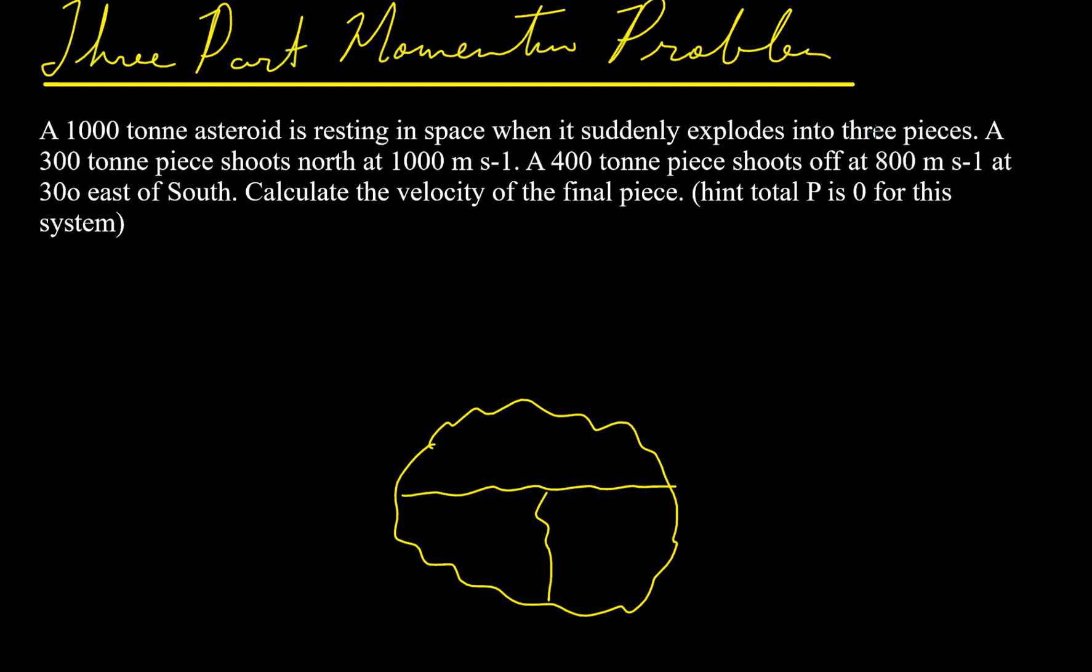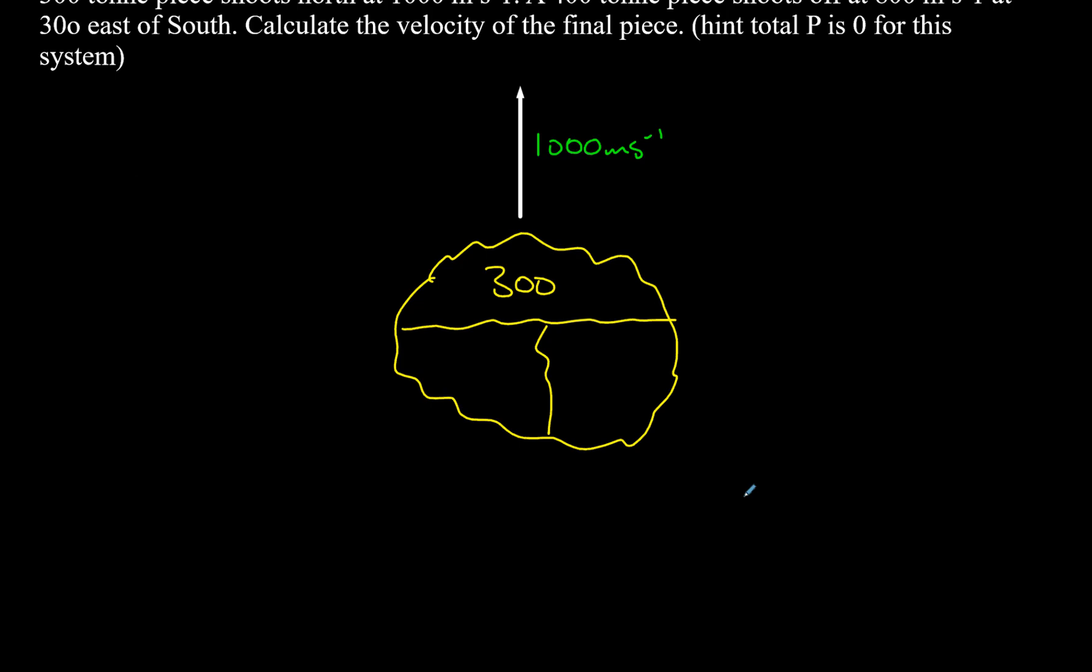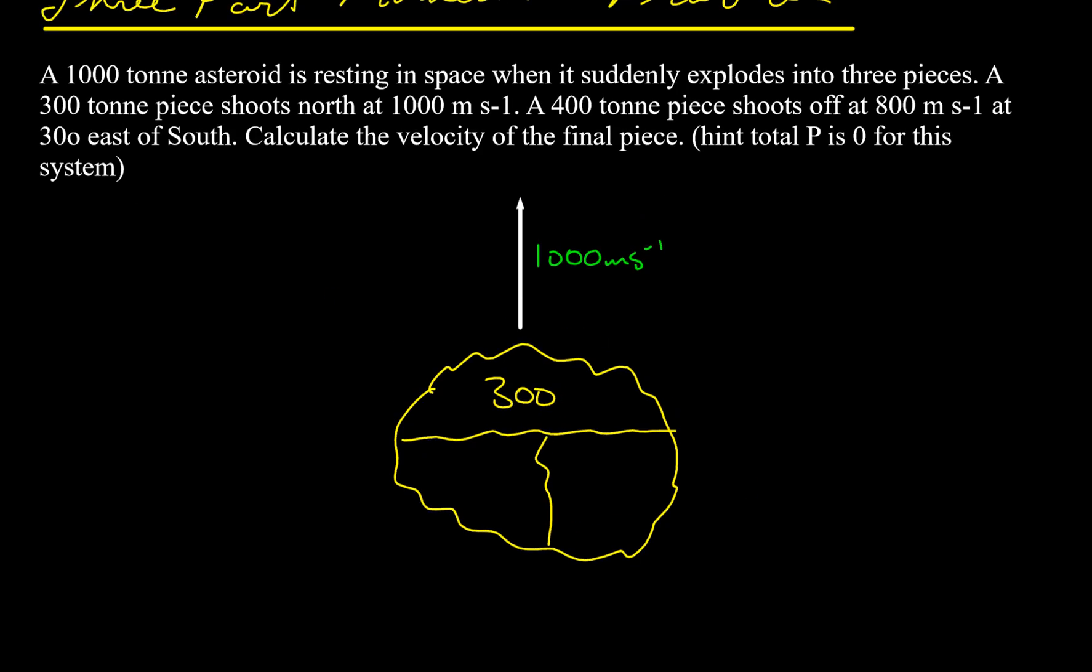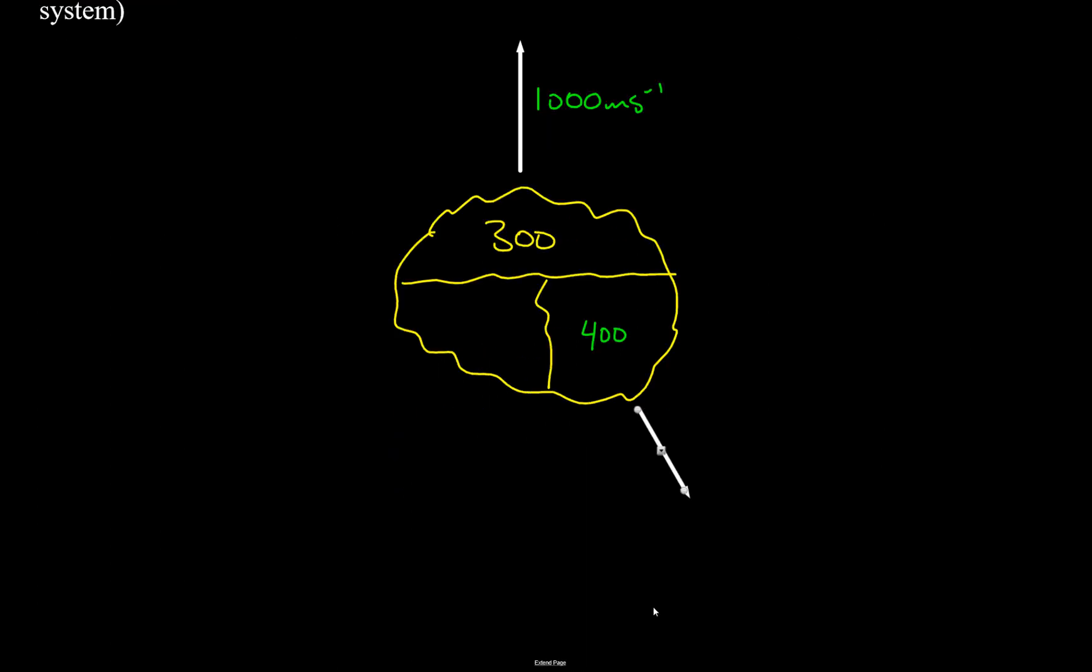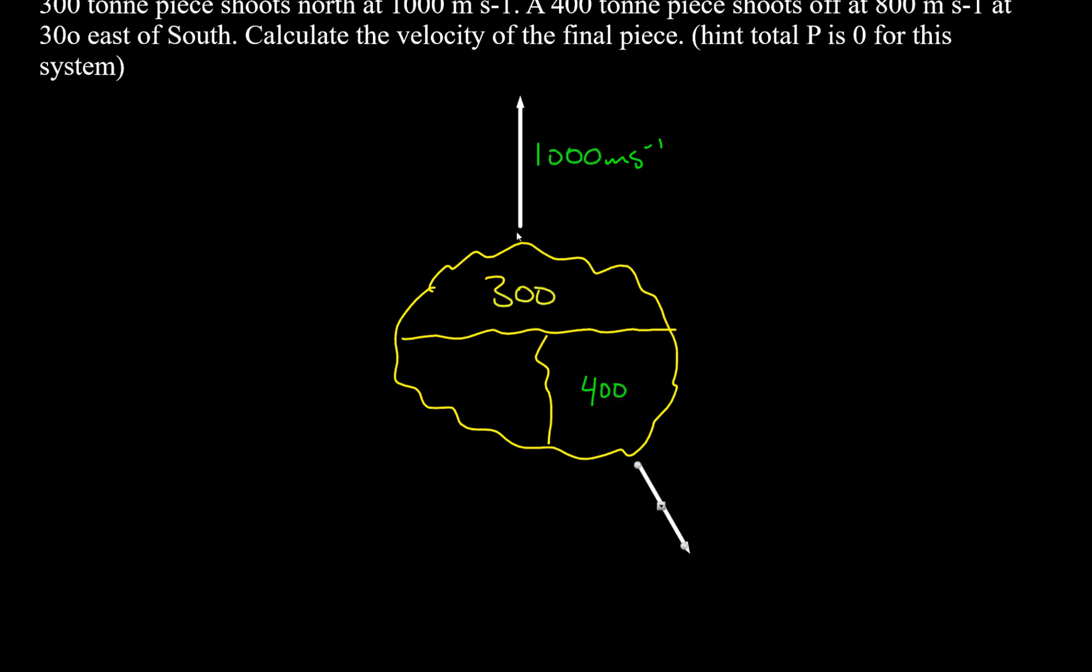It's a thousand tons and it explodes into three pieces. A 300 ton piece shoots north. Obviously there's no north in space, but to give us a frame to work within, we just call it north, so that's up. And it says that's a thousand meters per second. Then a 400 ton piece shoots off at 800 meters per second at 30 degrees east of south. Intuitively you probably would be able to tell that the third piece is going to go off in this direction somewhere.